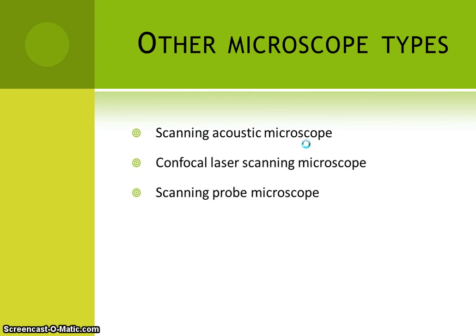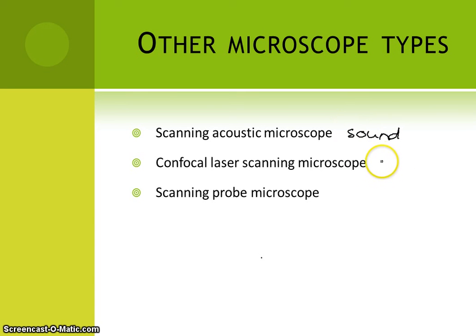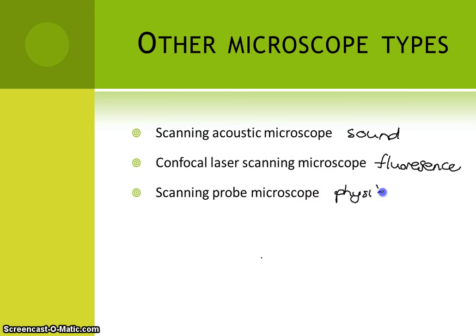These are three other microscopes that have been produced since then, in the late 1970s and 1980s. The acoustic microscope uses sound in the same way that echolocation does. The confocal microscope uses fluorescence. And the scanning probe microscope actually physically touches the object and develops an image through that. So that's the development of microscopes.